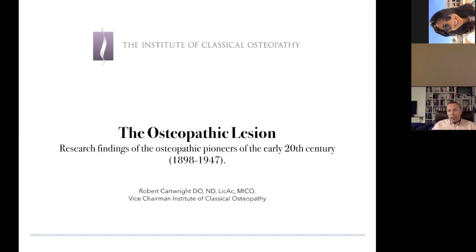The word 'lesion' or 'osteopathic spinal lesion' is used a lot here because it's easier to say than 'somatic dysfunction.' I don't particularly like the word osteopathic spinal lesion because it implies bone A on bone B is misplaced in some way, which isn't really what's going on. Somatic dysfunction is another expression which at least implies it's more than just a local thing — an osteopathic spinal lesion is really just the tip of an iceberg, delving deep into the physiology of its owner.